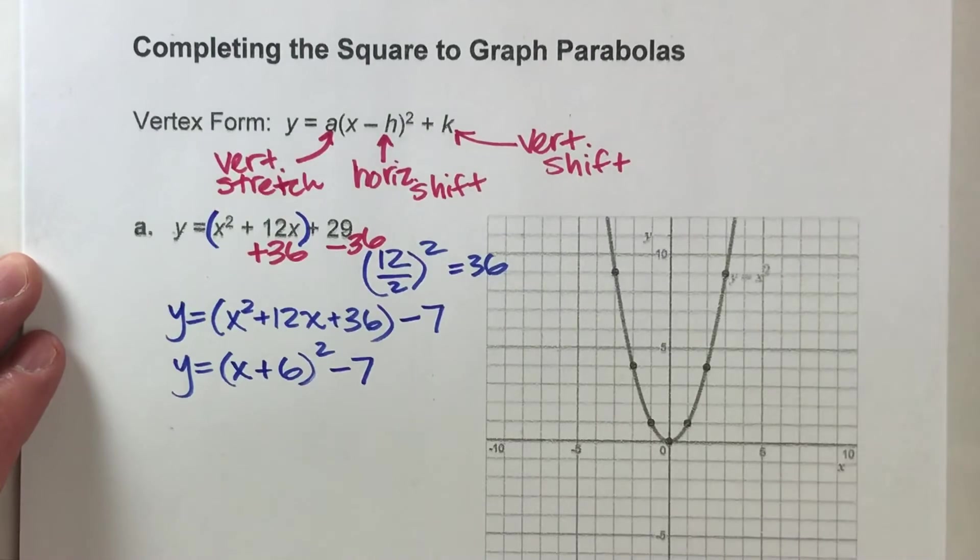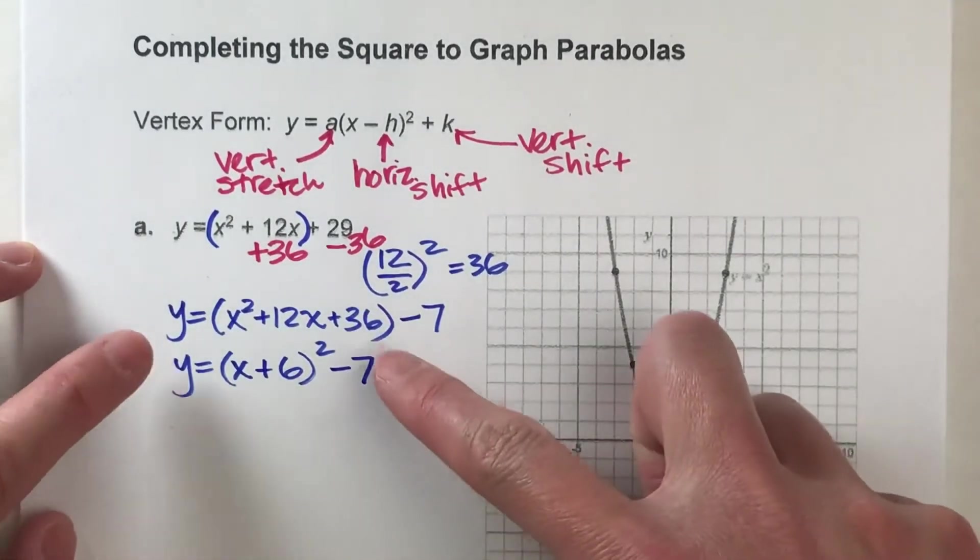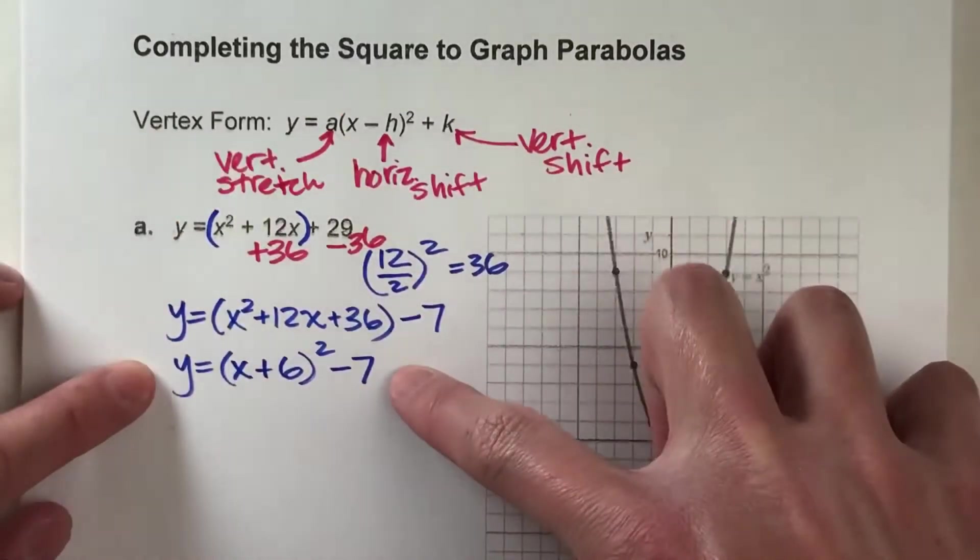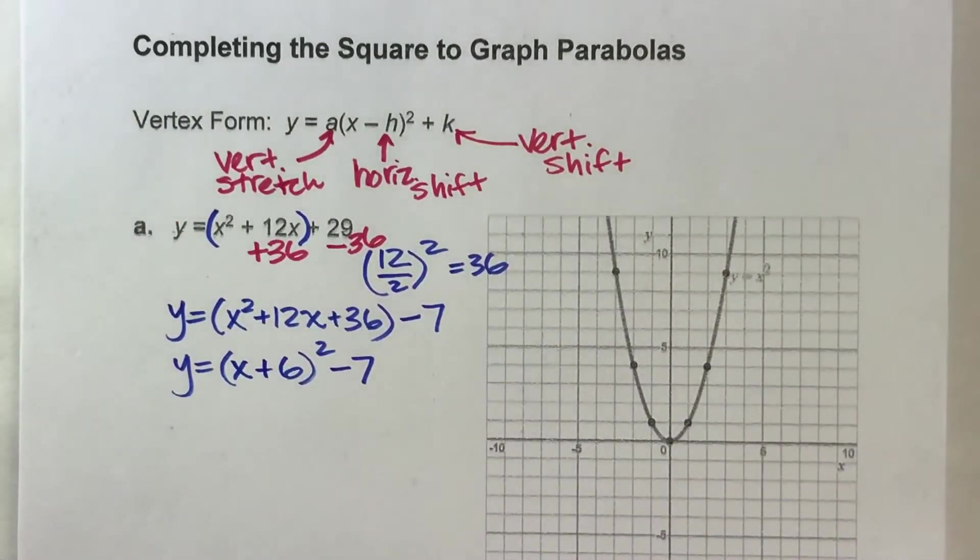And look what we have now. We actually have our equation in vertex form now. And now we can actually graph this.